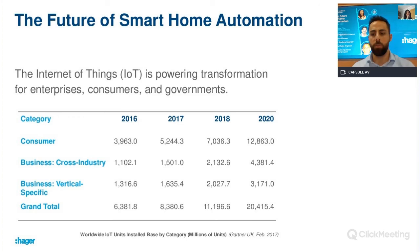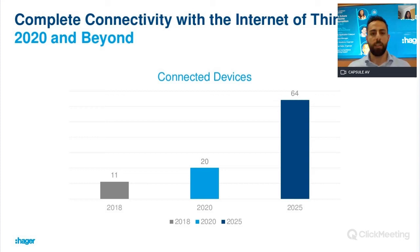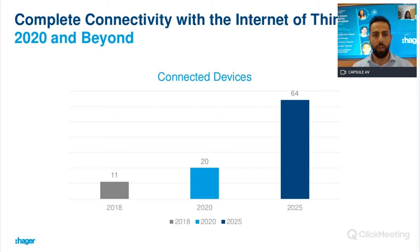Looking at connected devices overall, we see an increase of more than 300% from now — and we are talking about total connected IoT devices, not only consumer or smart home. In five years from now, we will have almost 64 billion devices, and we expect to have complete connectivity of IoT from this year and beyond.